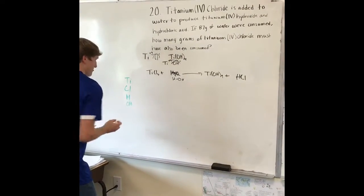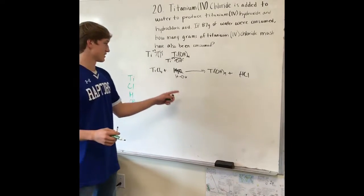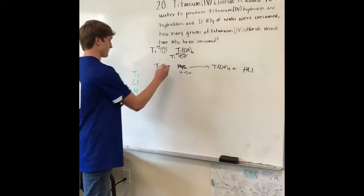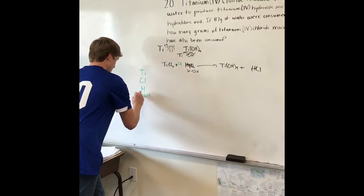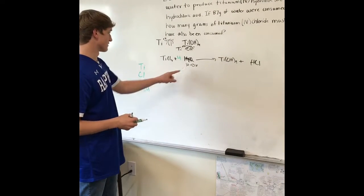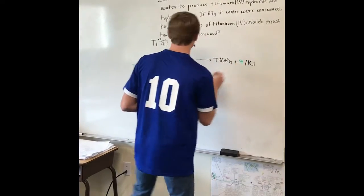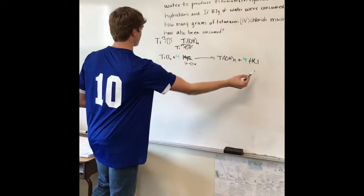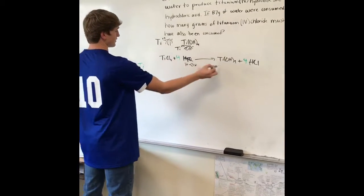You want to balance it out. This side has 4 OH groups, so put 4 here to balance it. Now each side has 4 hydroxide. Since this has 4, you need to add 4 hydrogen to this side. Now hydrogen has 4 on each side, chloride has 4 and 4, and titanium has 1 and 1.